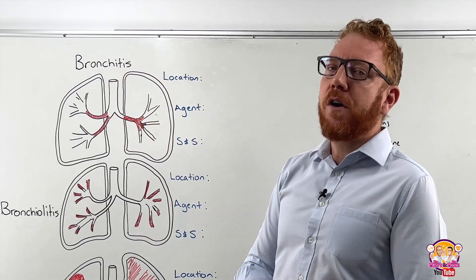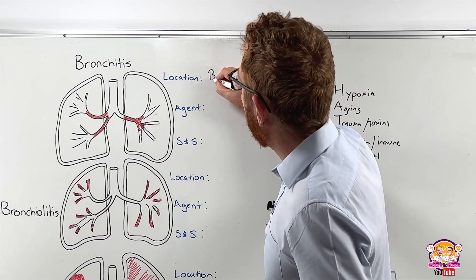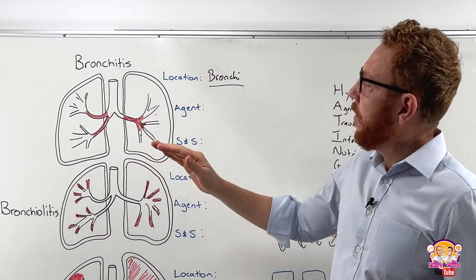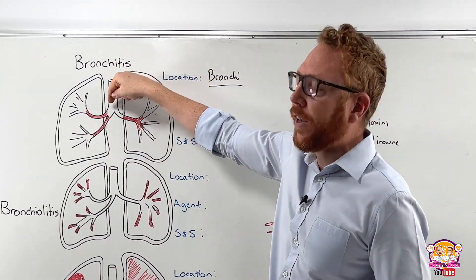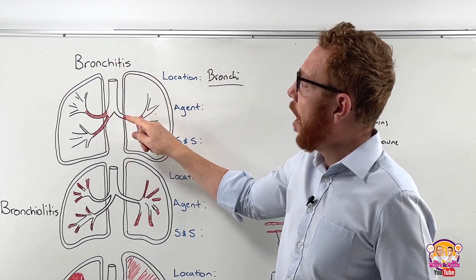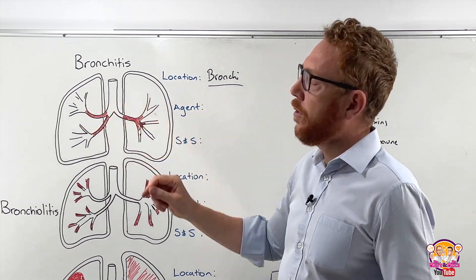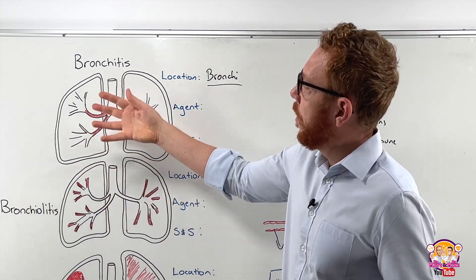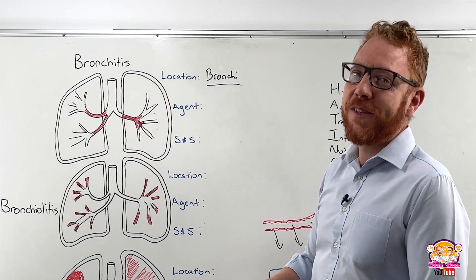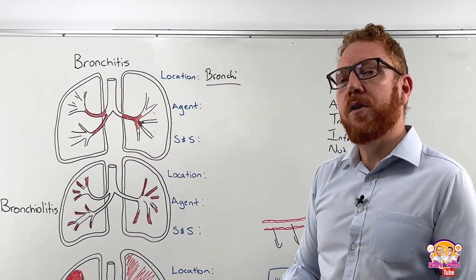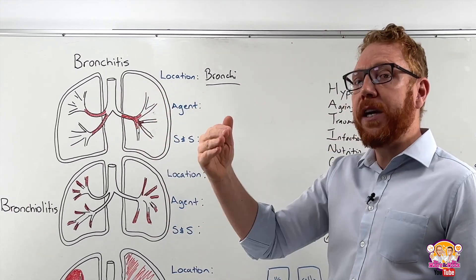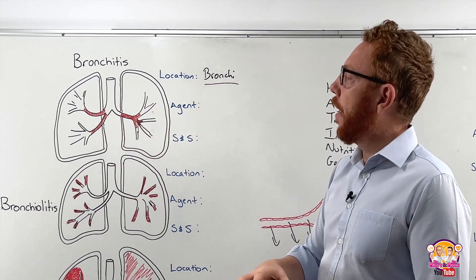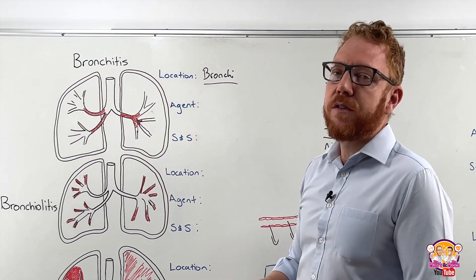The first condition is bronchitis. The location is the bronchi. From the pharynx we go down to the trachea, into the primary bronchus — that's the first division. The primary bronchus goes to the right and left lung. Then the primary splits into secondary, which goes to the lobes — three on the right, two on the left. Then tertiary, which goes to the bronchopulmonary segments — ten on each lung. We keep going to the fourth, fifth, and sixth division — all of these are bronchi. Any of those divisions can become inflamed.